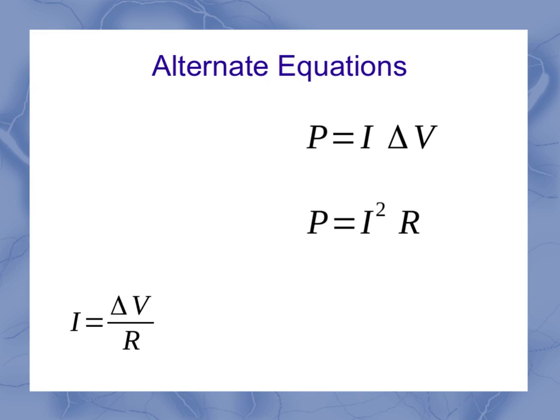Similarly, my current can be defined as a voltage per resistance. And plugging that in, I could see that my power is also equal to the voltage squared over the resistance. So these three are all acceptable representations for the power in an electrical circuit.